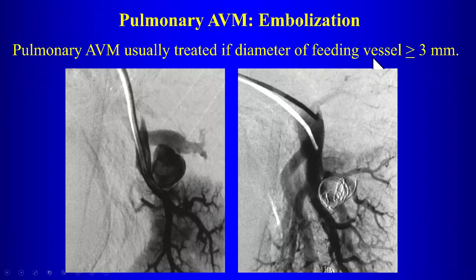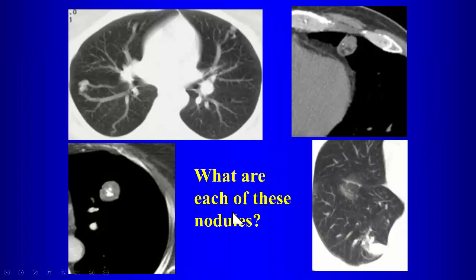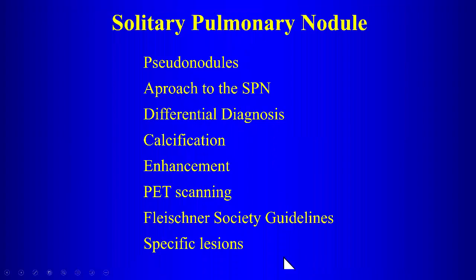In the final case review: a lesion with a visible feeding artery and draining vein is an AVM. A lesion with fat visible on CT is a hamartoma. A popcorn-calcified lesion is likely also a hamartoma. A pleural-based opacity demonstrating the comet tail sign represents rounded atelectasis. That's it for today, and there will be a quiz for the next slides.